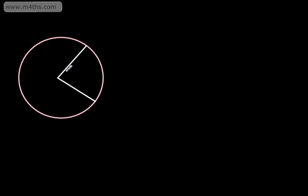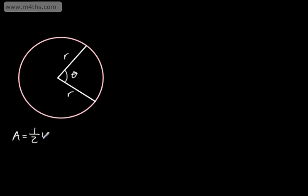I'm going to put on that this angle is going to be theta. Theta is going to be measured in radians, and this is going to be r, the radius. We can say that the area of a sector, when the angle is measured in radians, is one-half r-squared theta.